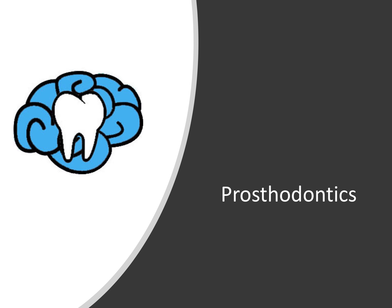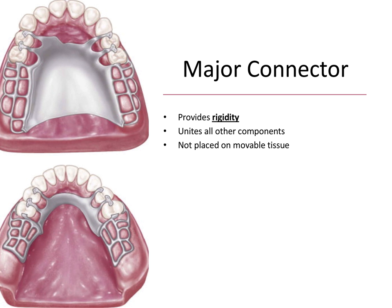Hey everyone, this is Ryan here and I'm back with another prosthodontics video. In this one we're going to start talking about the partial denture framework, which refers to all of the metal components of the partial. Particularly we're going to look at major and minor connectors and what those are all about. So let's start with the major connector.